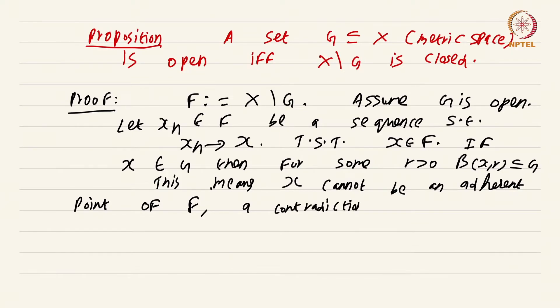Right? What will happen is after a particular stage we must have x_n there in this open set B(x,r). That is simply not possible because B(x,r) is now a subset of G.